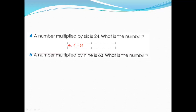Next: a number multiplied by nine is 63 — what is the number? The answer in the previous one was four. Now we multiply by nine, so we need the table of nine. Nine multiplied by what equals 63? Nine nines are 81, nine eights are 72 — if you know the table it's easy.